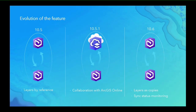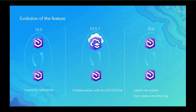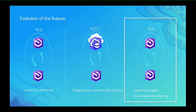I wanted to talk about the evolution of the feature, since there are differences across versions. The feature was introduced at 10.5, so be sure to be on at minimum ArcGIS Enterprise 10.5. At that version, you could share items as reference. At 10.5.1, we introduced the ability to collaborate with ArcGIS Online. At 10.6, we introduced sharing layers as copies in addition to by reference, and also introduced synchronization status monitoring. We highly recommend being on 10.6 for collaborating with Online or Enterprise.